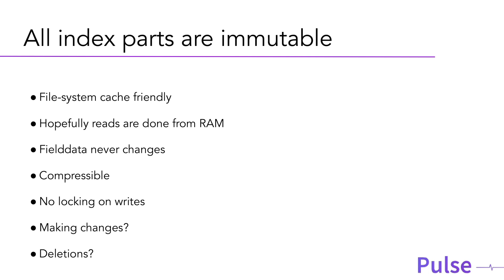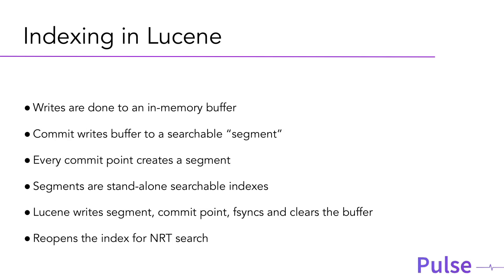This immutable design is good because when you have data that's already been written and optimized, it can be compressed. There is no locking on writes, so you can write in parallel and have very high write throughput. It's file system cache friendly as well — overall it's a good design decision. But the problem is that making changes and deletions has to be done this way, and when you do a lot of writes and updates, it creates some technical debt.